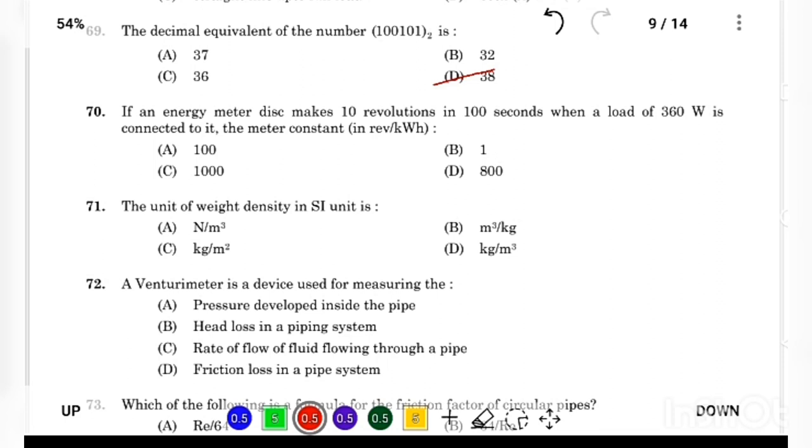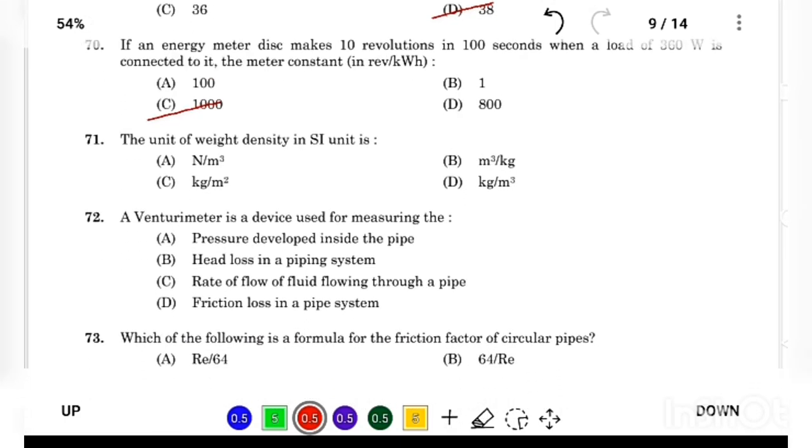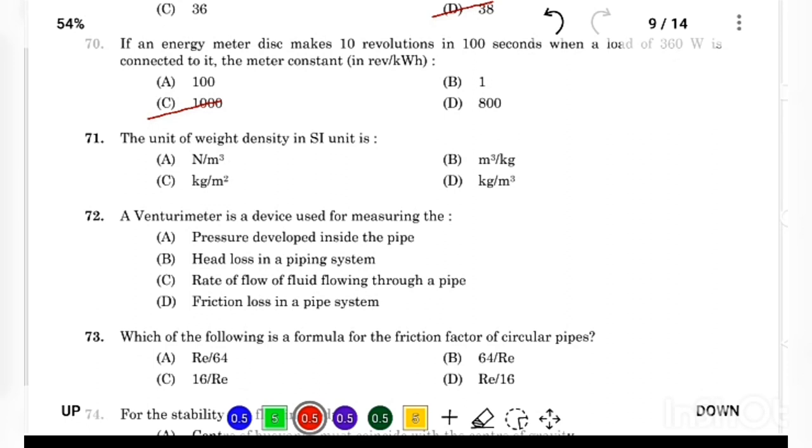If an energy meter disc makes 10 revolutions in 100 seconds when a load of 360 watt is connected to it, the meter constant is Answer Option C, 1000. The unit of weight density in SI units is Answer Option A, newton per meter cube.